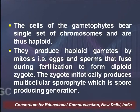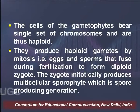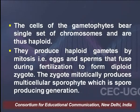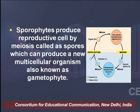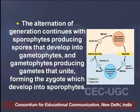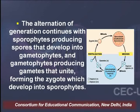The cells of the gametophytes bear a single set of chromosomes and are thus haploid. They produce haploid gametes by mitosis — for example, eggs and sperm — that fuse during fertilization to form diploid zygotes. The zygote mitotically produces a multicellular sporophyte, which is the spore-producing generation. The sporophytes produce reproductive cells by meiosis called spores, which can produce a new multicellular organism also known as the gametophyte. This alternation continues with sporophytes producing spores that develop into gametophytes, and gametophytes producing gametes that unite to form zygotes developing into sporophytes.